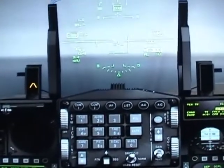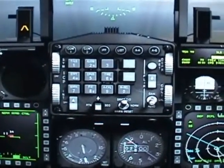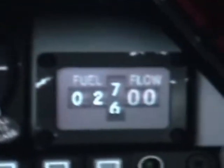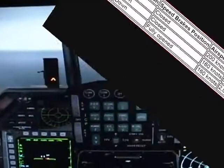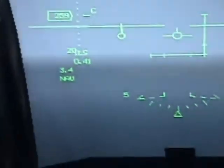Now let me pause to tell you about speeds and descent rates. Using your fuel flow gauge, you're going to come to this chart. You can see the different speeds and positions — for example, flight attitude level, gear position up, speed brakes closed, airspeed to be maintained 200 knots. You need to have a fuel flow setting of 1,200 pounds per hour. Now you have your tacan set and everything is ready — your course is ready.